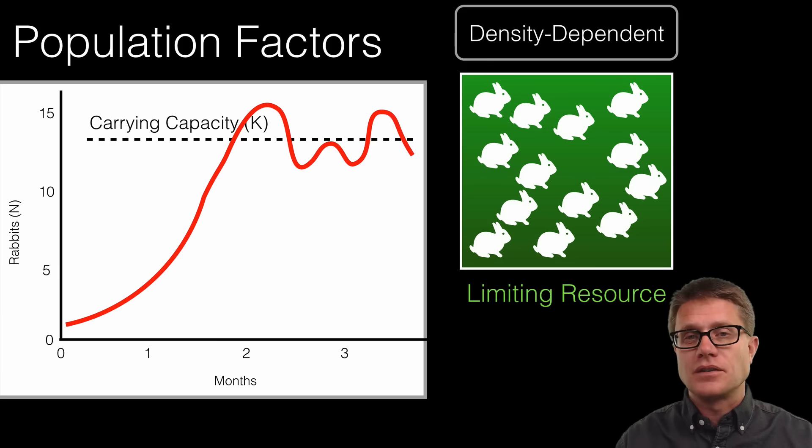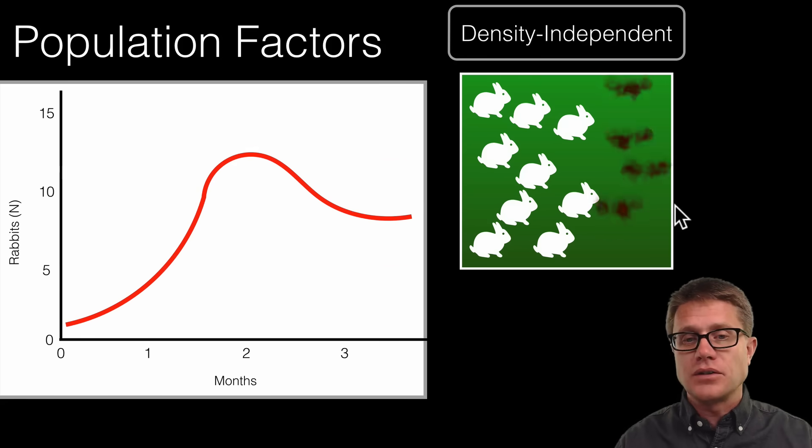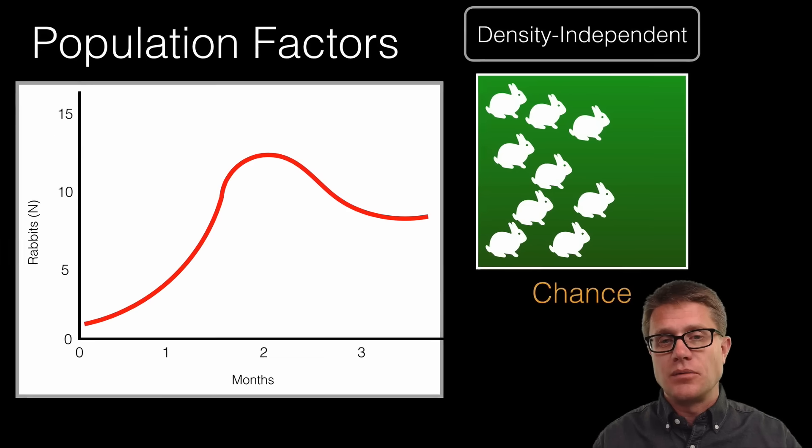These are density dependent factors. Because they are based on the density of the population. We can also have density independent. So imagine that these rabbits over on this side are killed in a forest fire. That is just chance. It is just chance taking over. And so it is not based on the density of rabbits that we had.